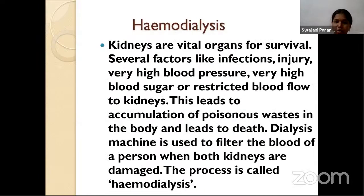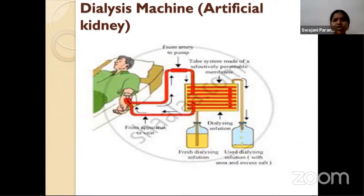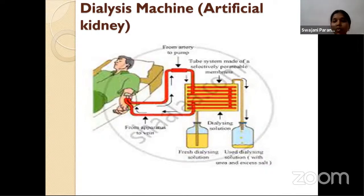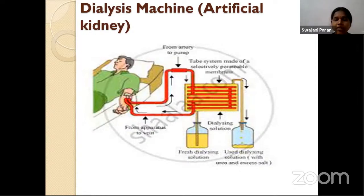The solution is dialysis. The dialysis machine is called the artificial kidney. In this process, blood is purified outside the body. Normally, the kidneys inside the body filter the blood, but if both kidneys are damaged, the person suffering with ESRD can go for dialysis techniques for blood filtration.